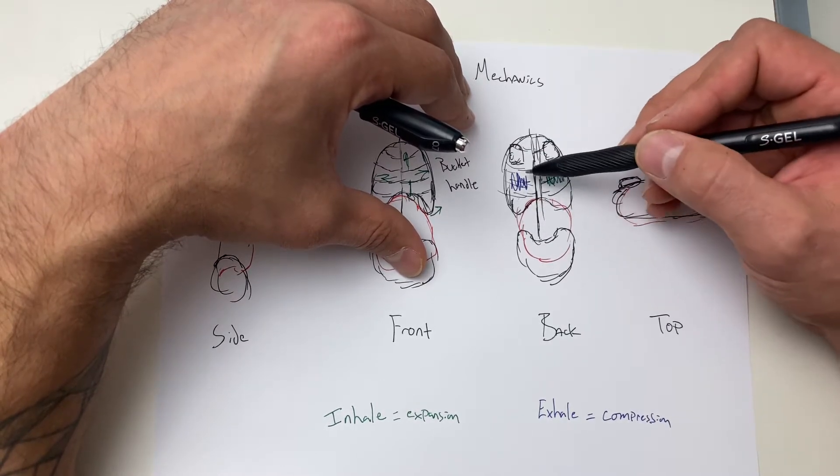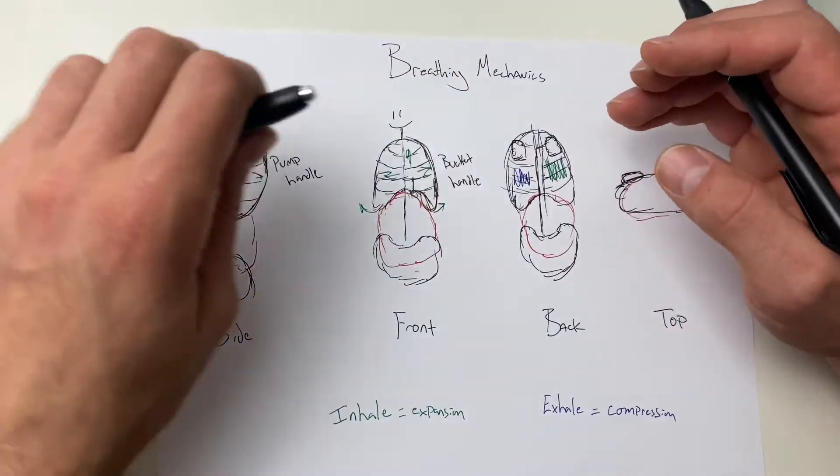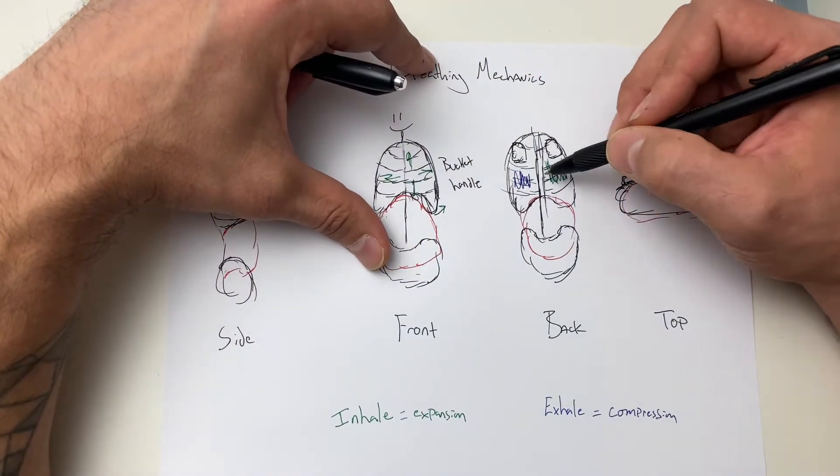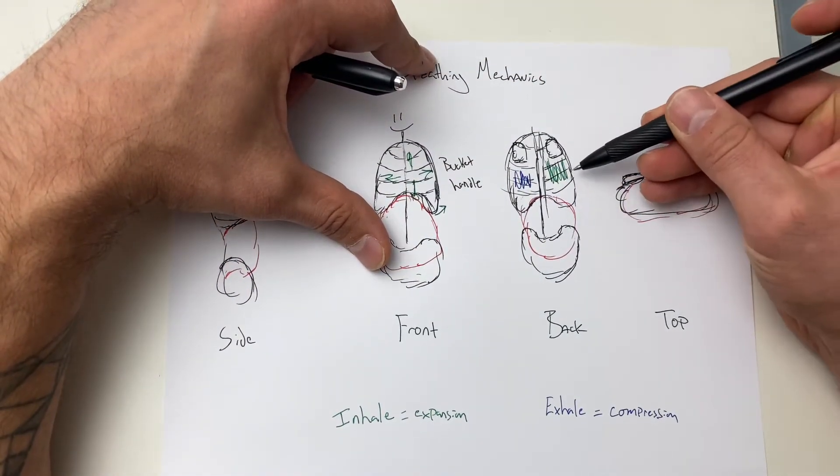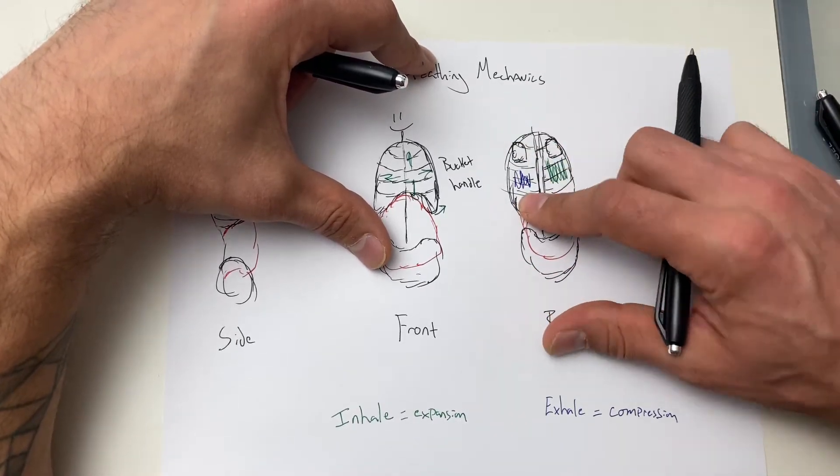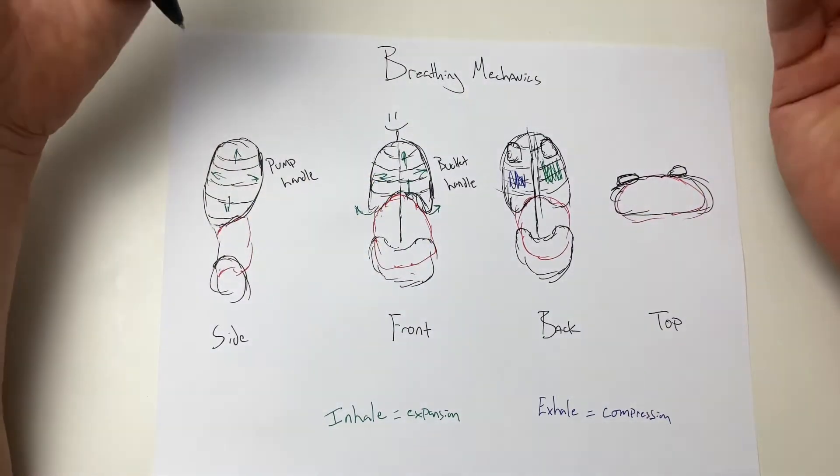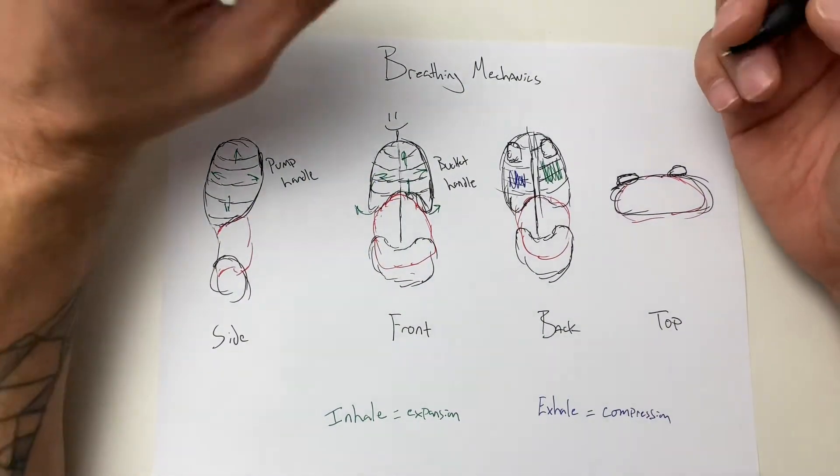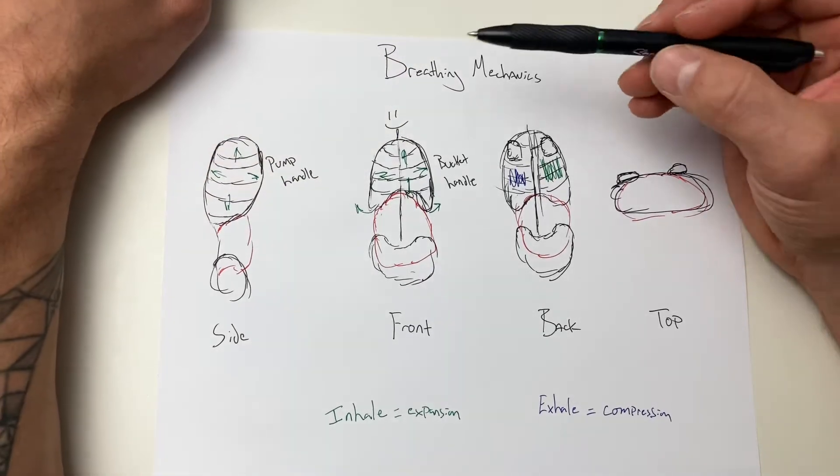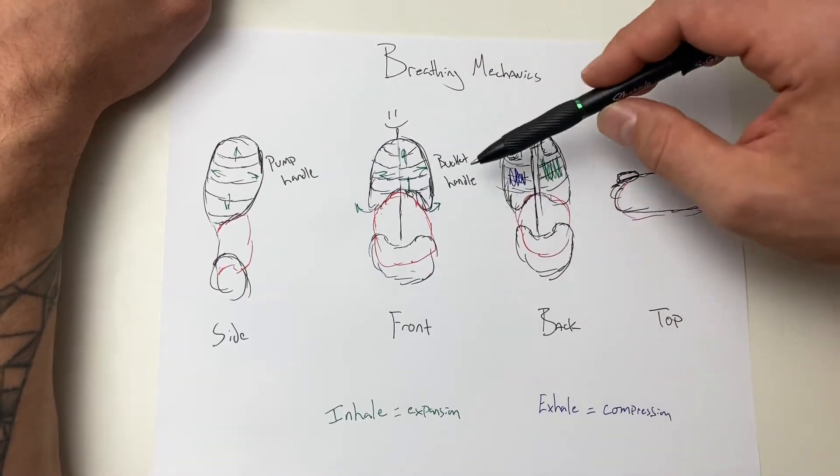If we're not getting full air here, we need to then put our client or ourselves in a position where we would almost compress this side and get expansion on this side to try and even it out. So you have to think from a training standpoint. You watch yourself or your clients take a deep breath. Do they have good pump handle action? Do they have good bucket handle action?